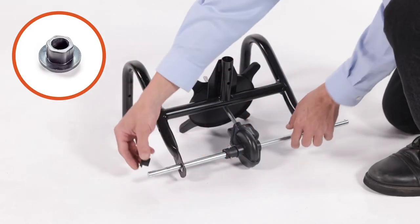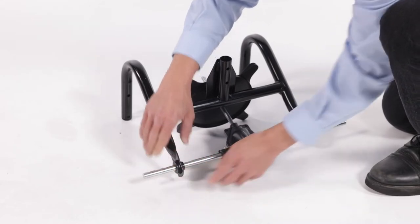Next, slide two flange bearings, Part I, onto the axle and press them into the frame.